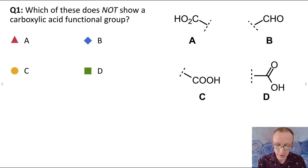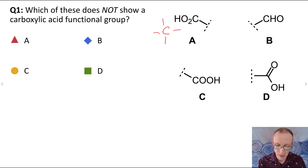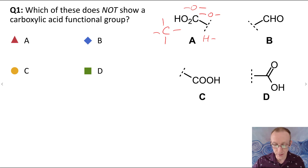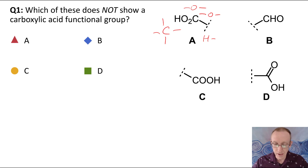So if we've got a carbon with four bonds, and we've got two oxygens that have two bonds each, and then a hydrogen with one bond, we need to fit these together in a formula that is CO₂H.